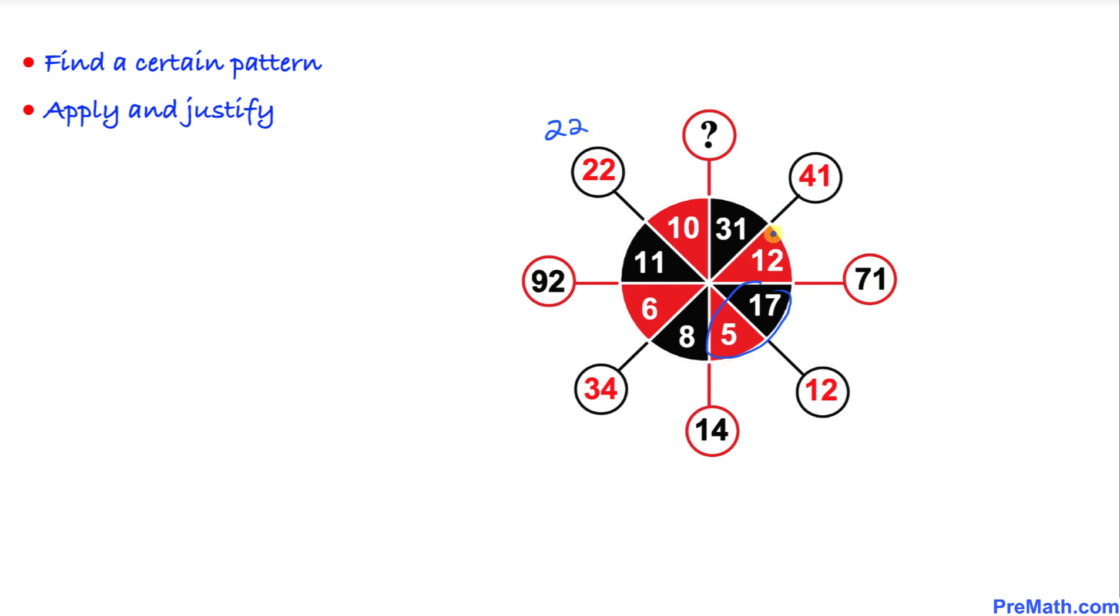Next we are going to look at these numbers: twelve plus seventeen is going to give us twenty-nine right across. Likewise, next two consecutive numbers, thirty-one plus twelve is going to give us forty-three right across. And the next two consecutive numbers is going to be ten plus thirty-one, which is going to give us forty-one.